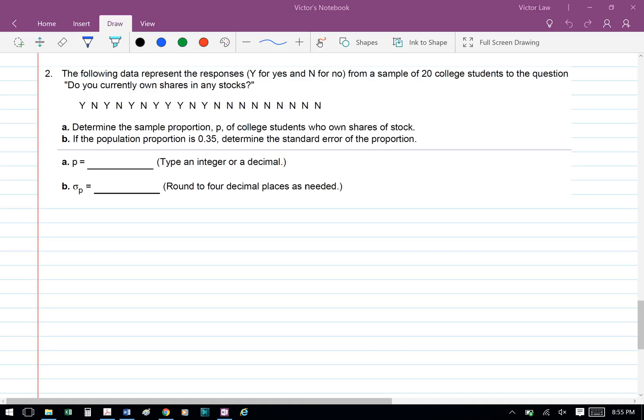Part A. Determine the sample proportion, p, of college students who own shares of stock. To solve for the sample proportion p, we're going to use the formula p equals x over n.